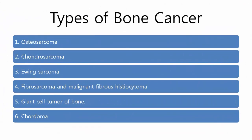Types of bone cancer: Osteosarcoma, Chondrosarcoma, Ewing sarcoma, Fibrosarcoma and malignant fibrous histiocytoma, Giant cell tumor of bone, and Chordoma.